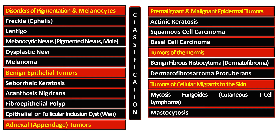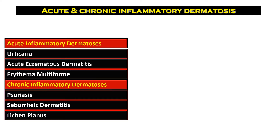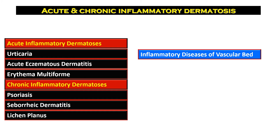The tumors of cellular migration to the skin are mycosis fungoides, which is cutaneous T-cell lymphoma, and mastocytosis. In this video we are going to study the acute inflammatory dermatosis such as urticaria, acute eczematous dermatitis, and erythema multiforme, and chronic inflammatory dermatosis that are psoriasis, seborrheic dermatitis, and lichen planus.